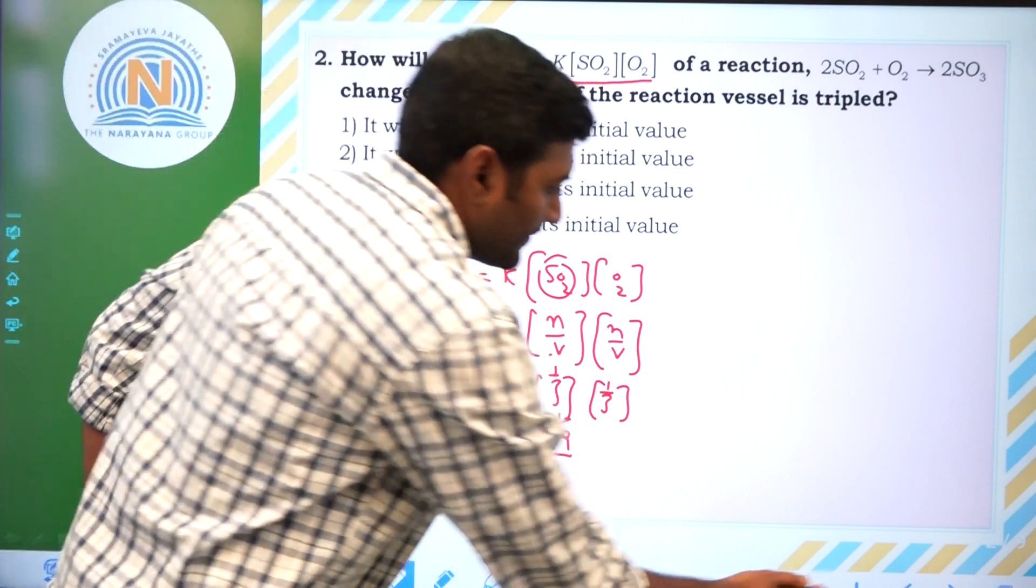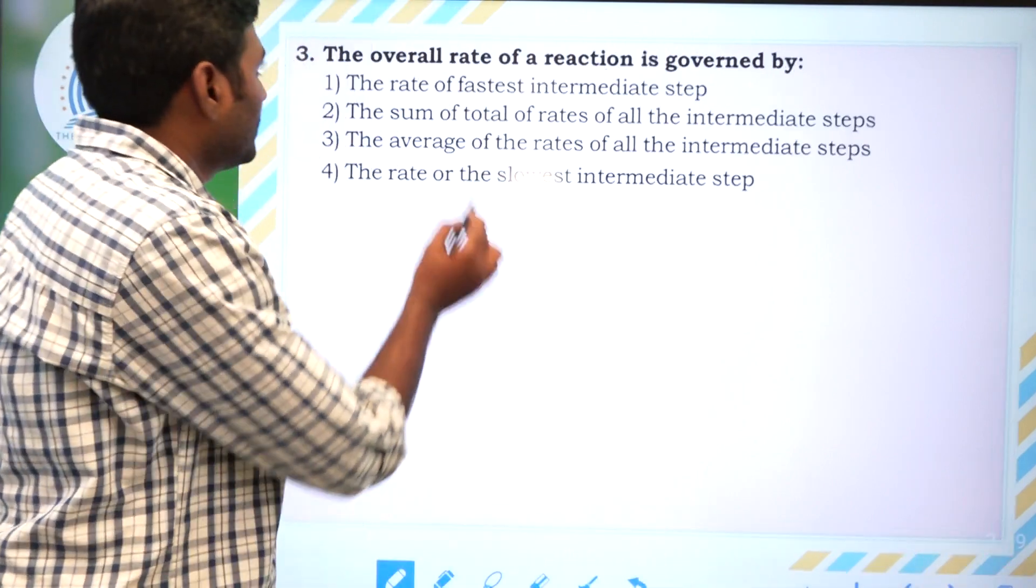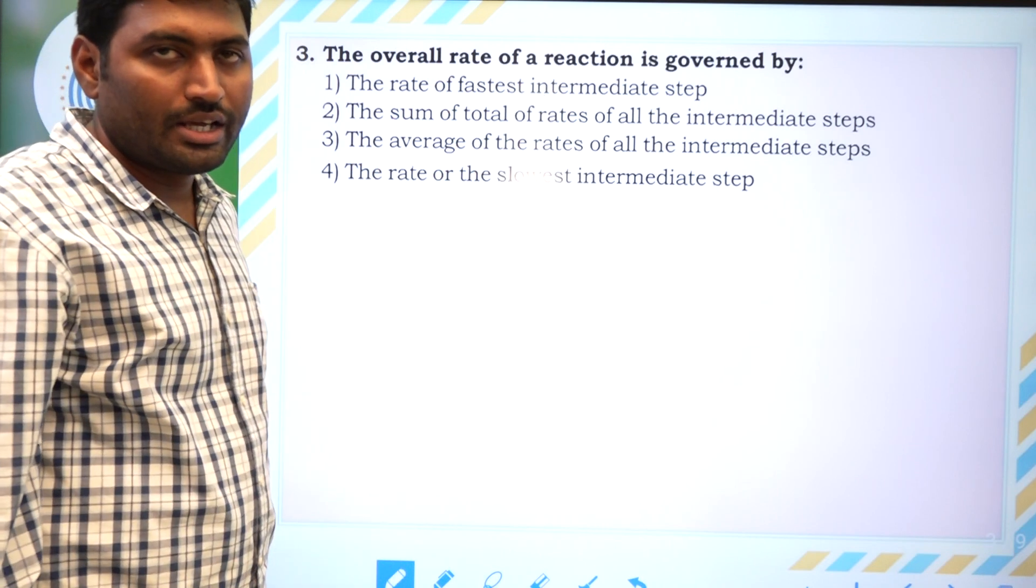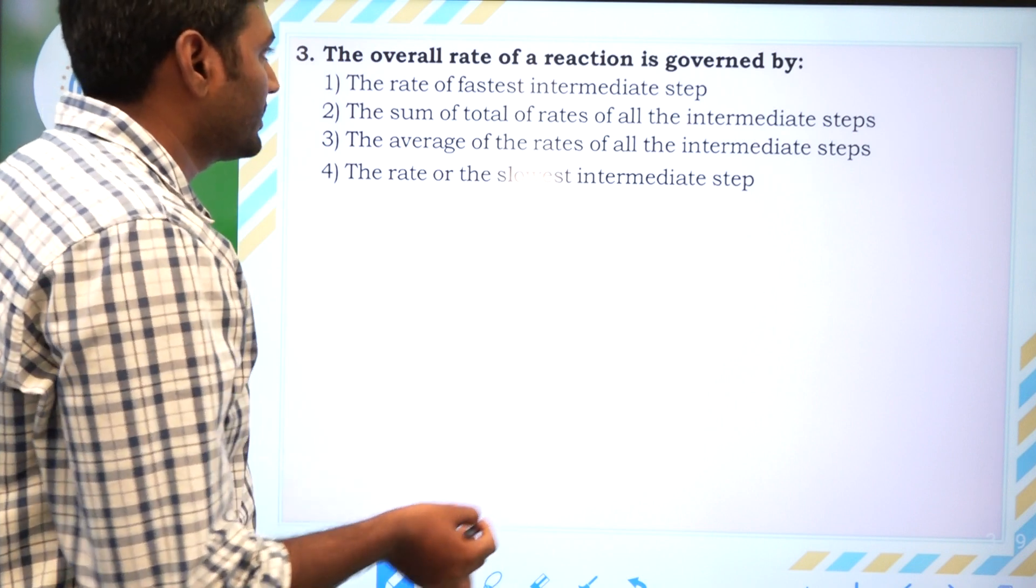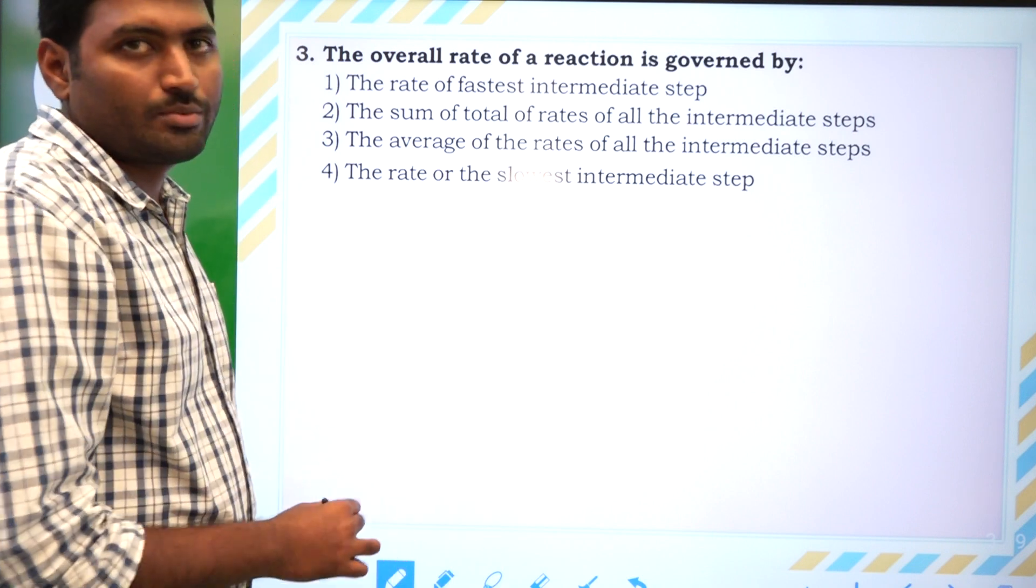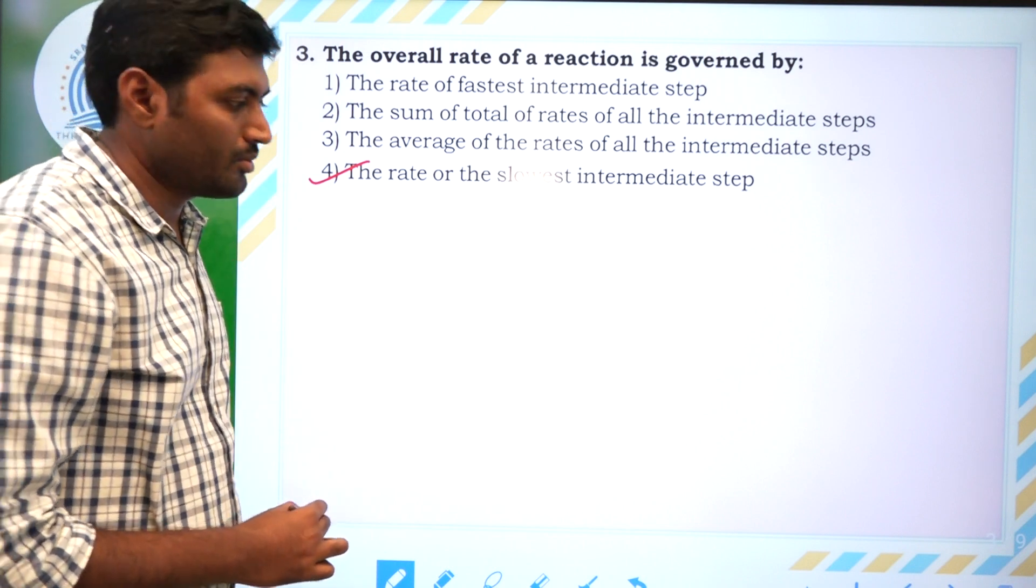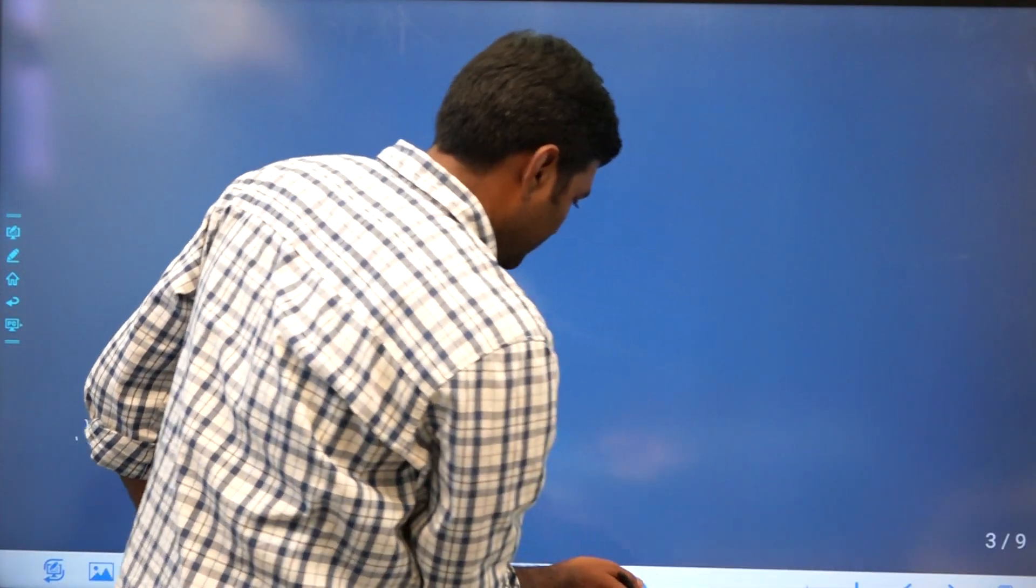The overall rate of the reaction is carried out in multiple steps. The overall rate is determined by the rate of the slowest step. Hence, it's the rate of the slowest intermediate step. Now, we will go to the next question.